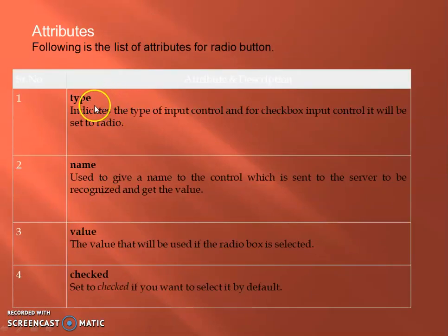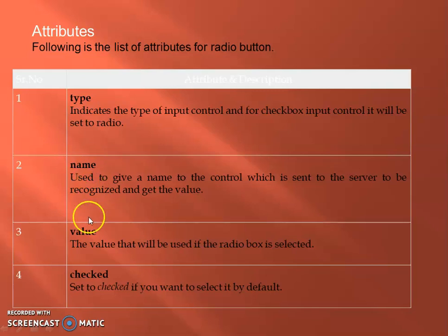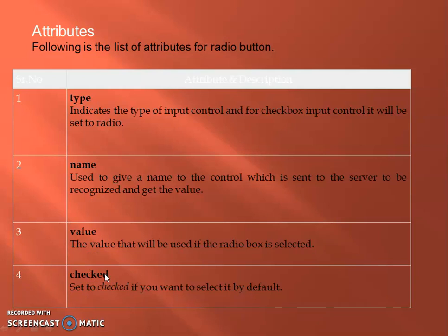For radio button, you can select attributes. Type attribute: input type equal to radio. Value: you can select value. Name is subject, sent to server. You can select radio button — male or female. Checked menu: by default type, when you are doing the site you can select the male value. Checked menu is used to set a default selection.